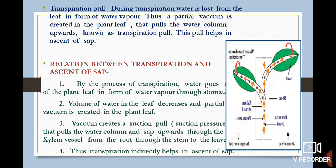The third factor is transpiration pull. During transpiration, water is lost from the leaf in the form of water vapor, so a partial vacuum is created. This partial vacuum in the leaf pulls the water column upward. A certain kind of root pressure also starts developing step by step. When this partial vacuum is created, the pressure helps pull the water column upwards — this is known as transpiration pull, which helps in ascent of sap.